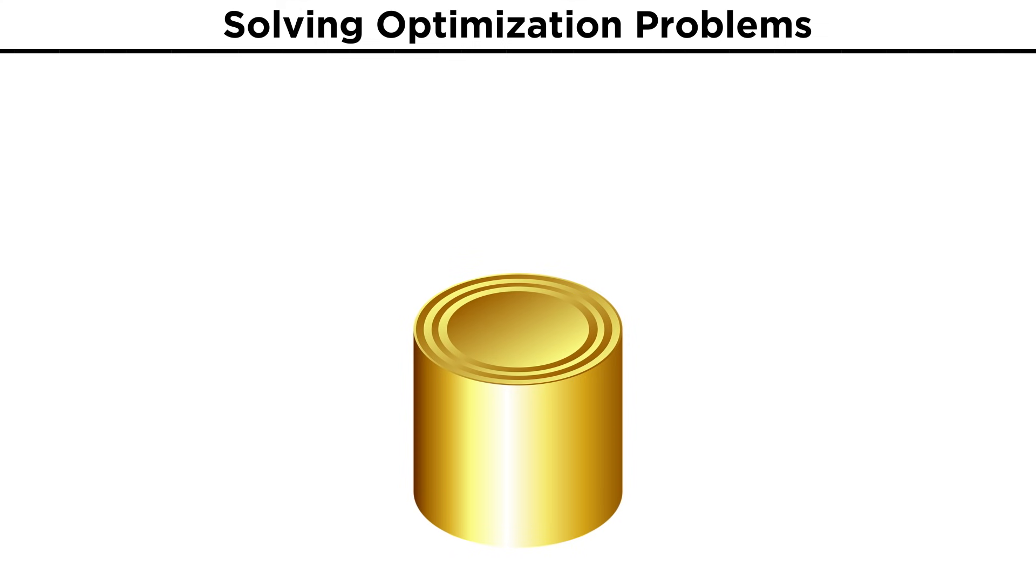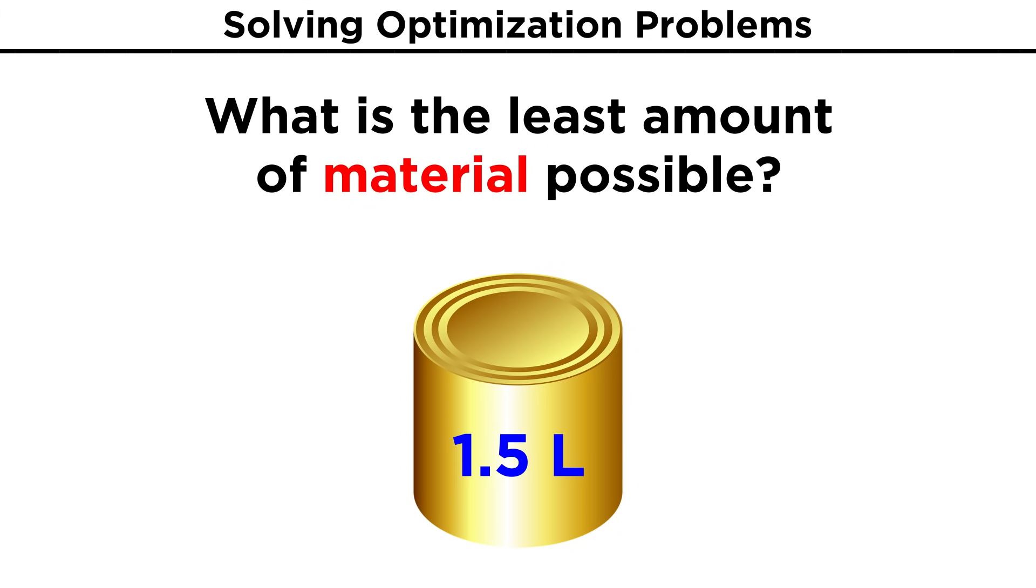Let's try another one. Say a canned good manufacturer wants to mass produce a product in a cylindrical can that must have a volume of one point five liters. In order to keep costs as low as possible, they want to find the least amount of material that can be used to achieve this particular volume. What amount will this be?